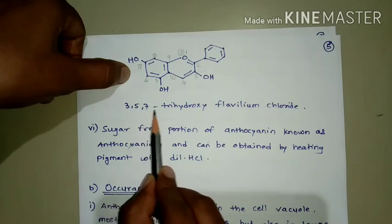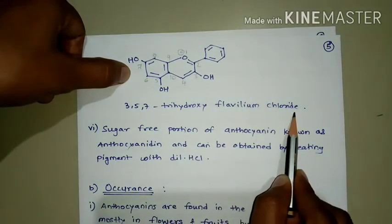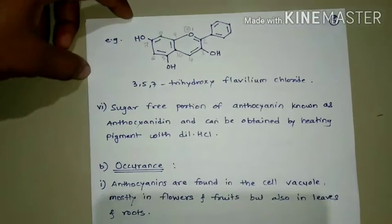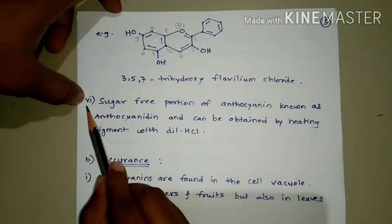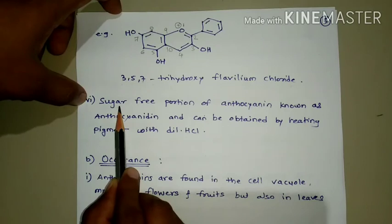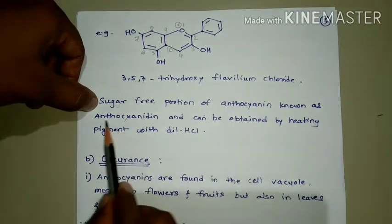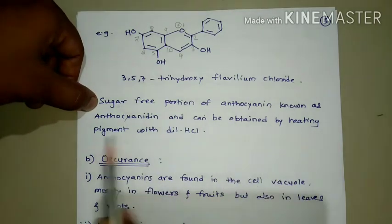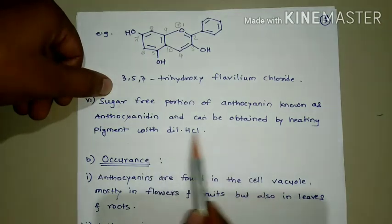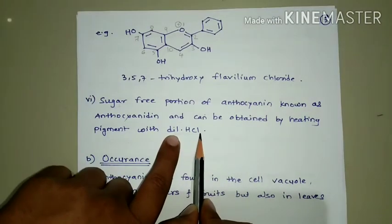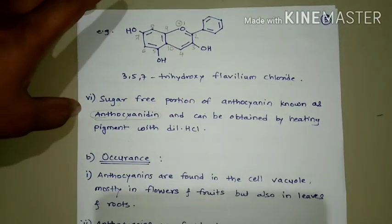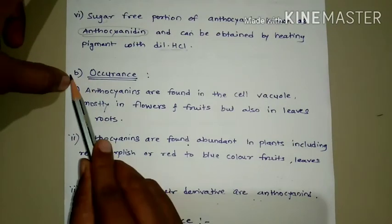The last structural feature: the sugar-free portion of anthocyanin, that is when the carbohydrate is removed from anthocyanin, is known as anthocyanidin. Anthocyanidin can be obtained by heating the pigment with dilute HCl. When anthocyanin is heated with dilute HCl, the sugar part is removed and the anthocyanidin molecule is formed.